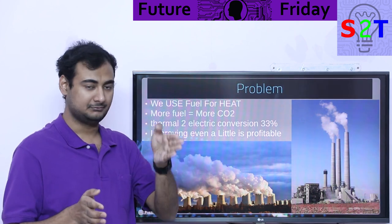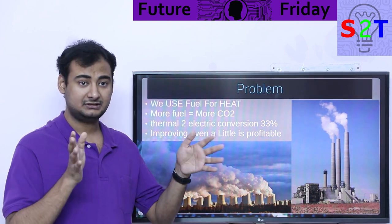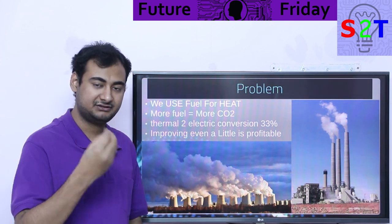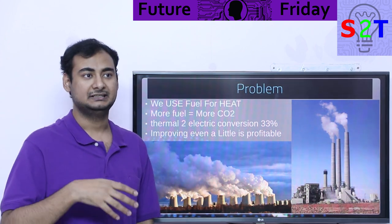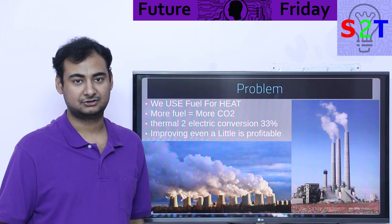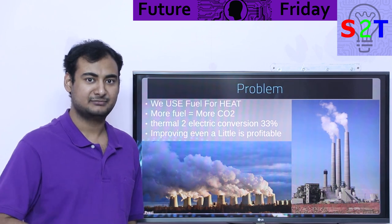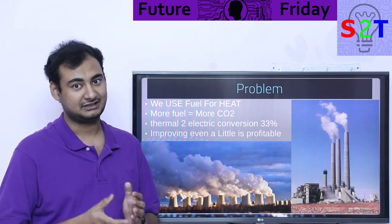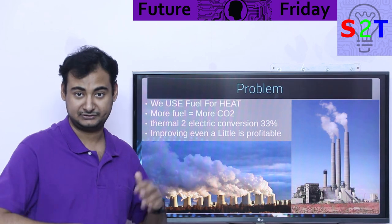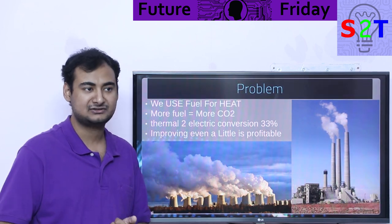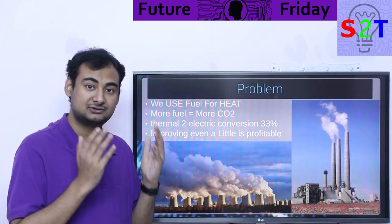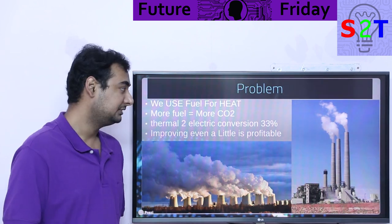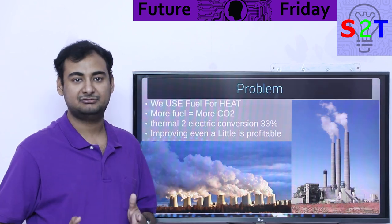If you've watched my previous video about steam turbines, you already understand that steam turbines have multiple stages — high pressure, medium pressure, low pressure. Even getting a little more work out of them translates to around 100 megawatts, which is a lot of profit. So improving efficiency is good for the environment and good for the people running the plant — it's a scenario where everybody wins.